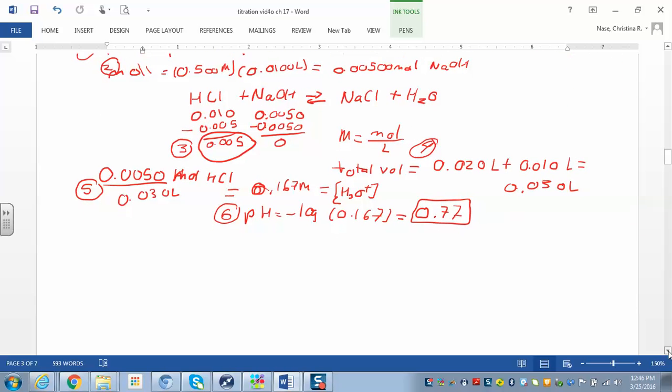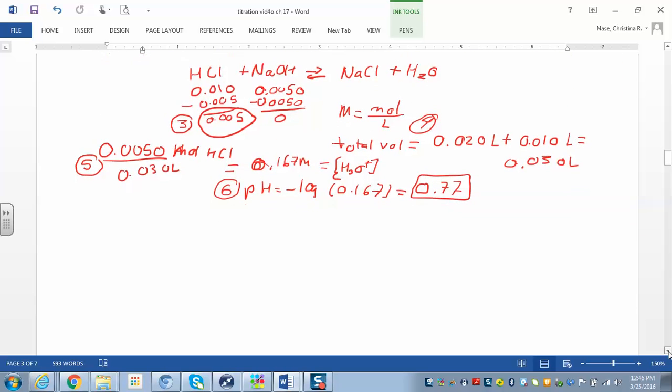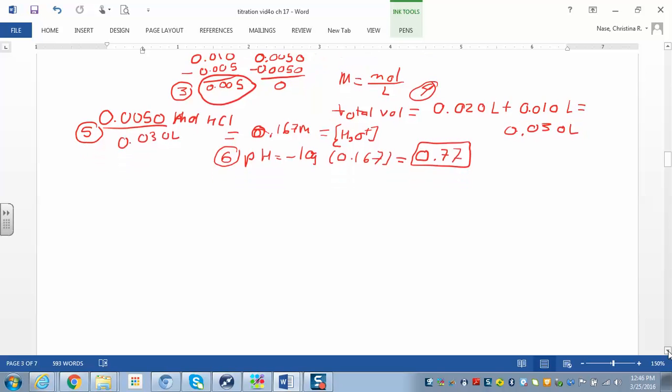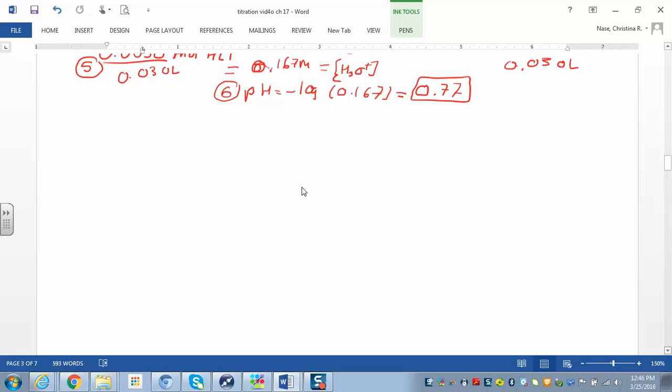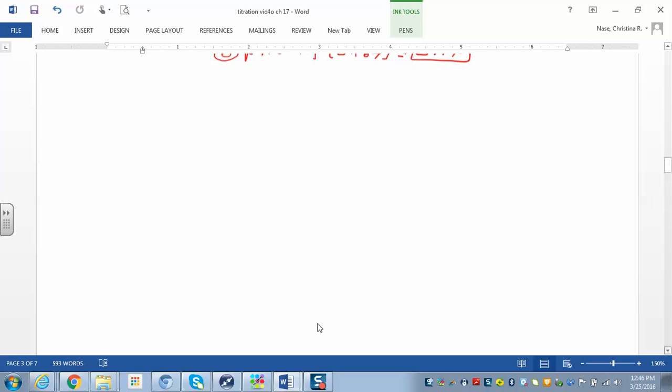Because if you have more acid, then you haven't reached the equivalence point yet. If you have more base, then you're beyond the equivalence point. If they're equal, then you're at the equivalence point. So, let's start here. At point number three, step three, or I think in your notes it might say C, we have 20 mils of 0.5 molar NaOH.